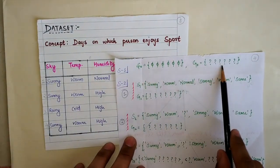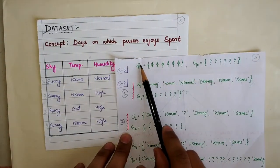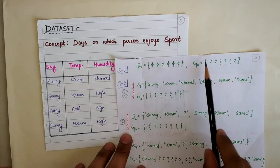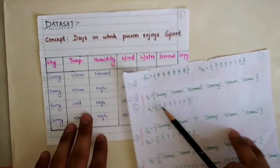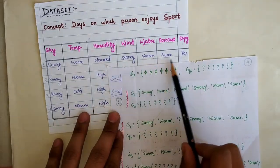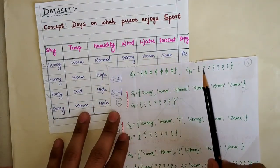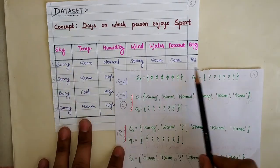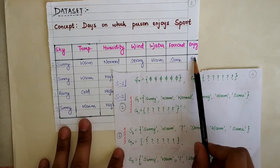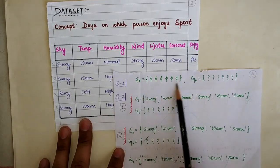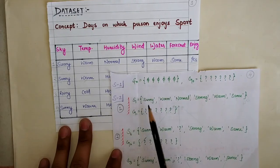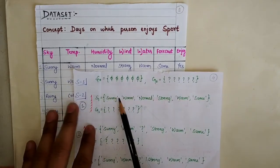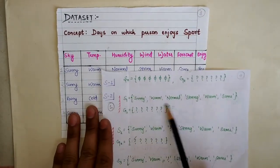As the first step, we initialize our specific hypothesis S0 and general hypothesis G0. For each example we check whether it is positive or negative. Our first example is a positive example, so we update the most specific hypothesis.